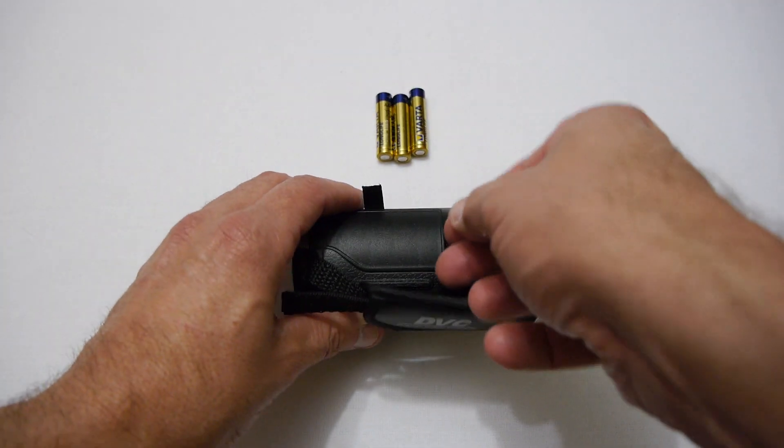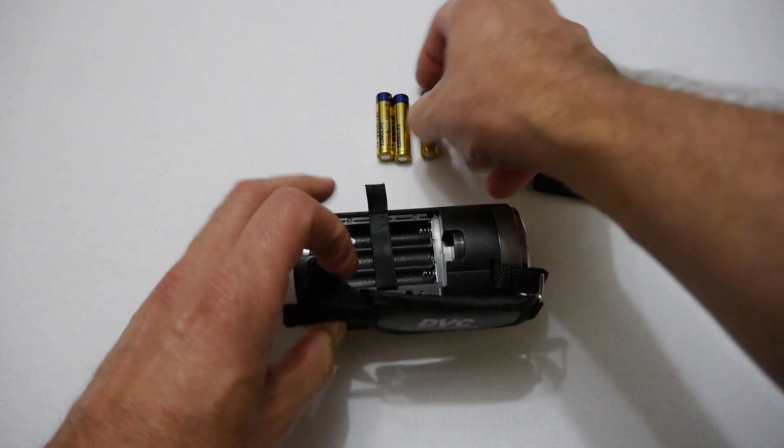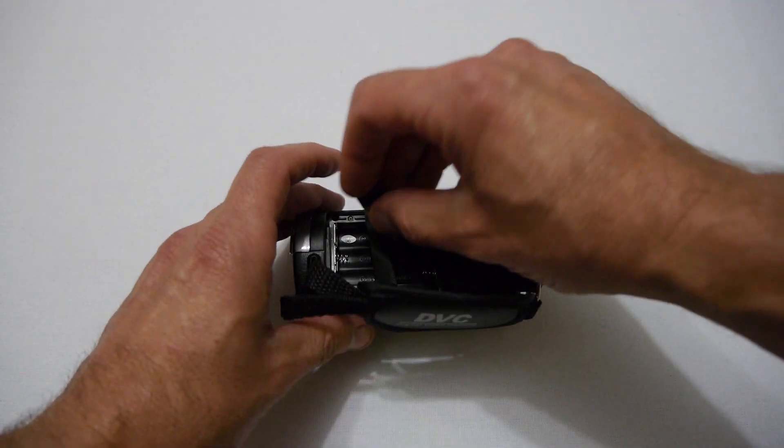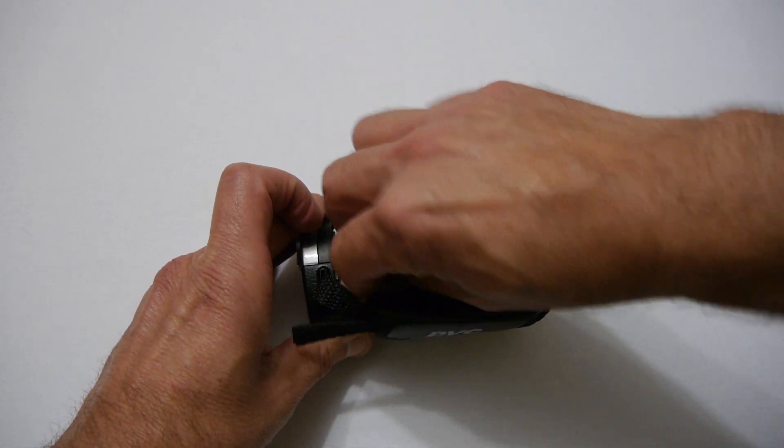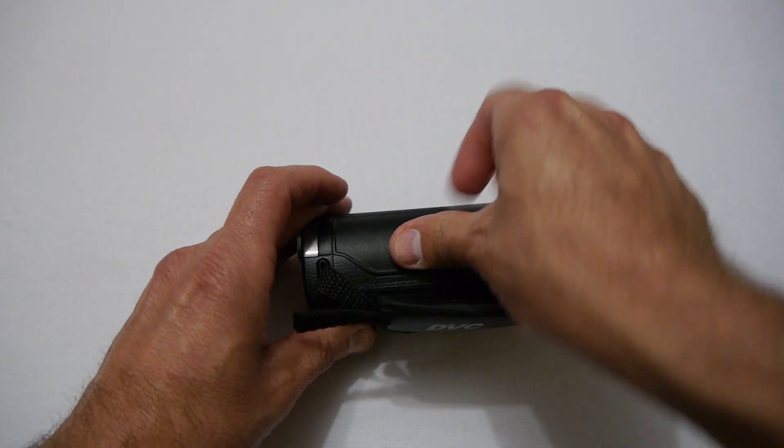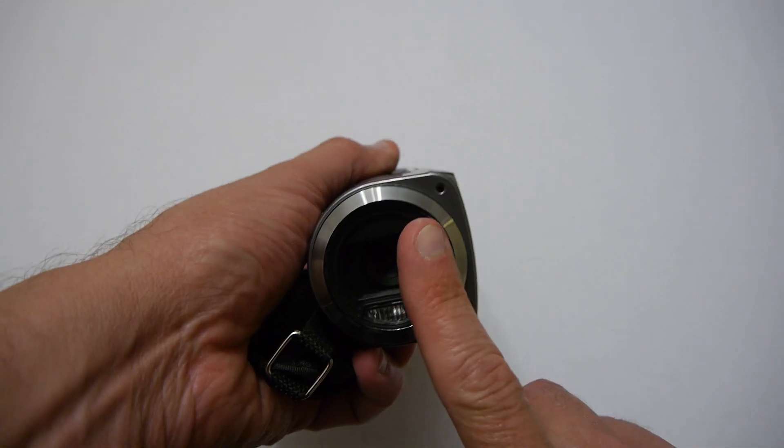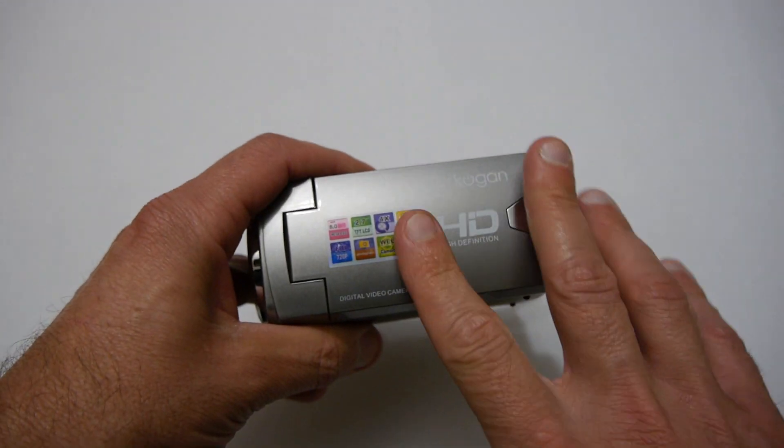So let's just load up the batteries into the unit. As you can see it just takes three AAAs, put them all in like so, put the lid on. So there you go. So next what we'll do is go and have a look at the menu on this unit.